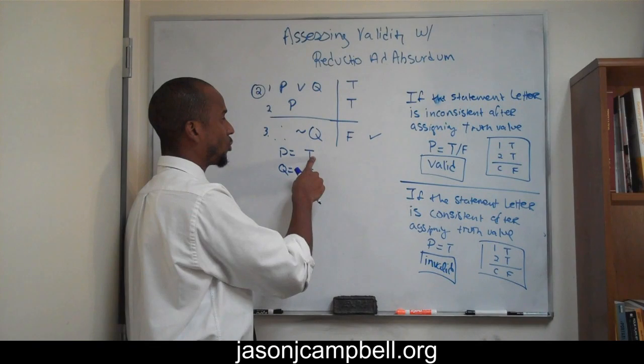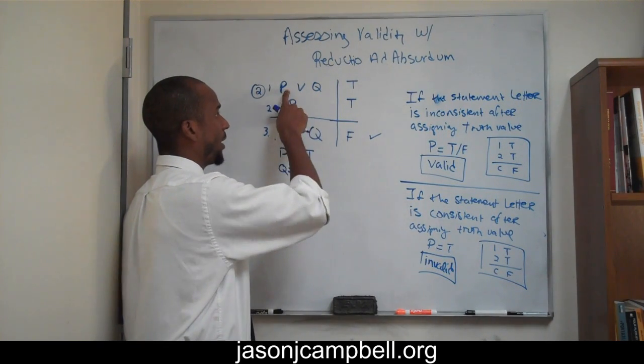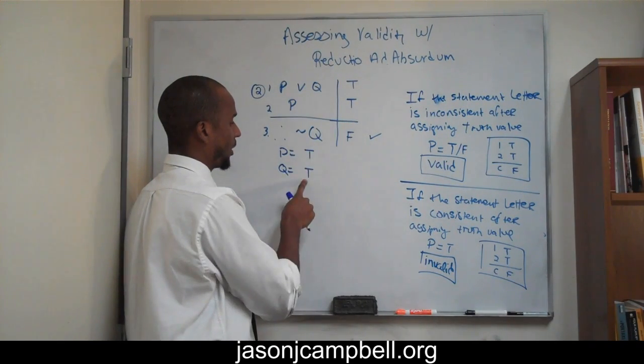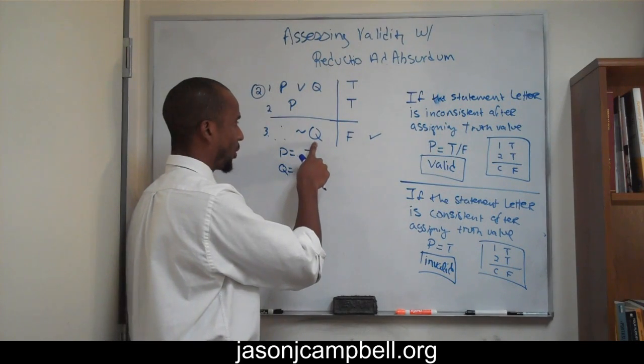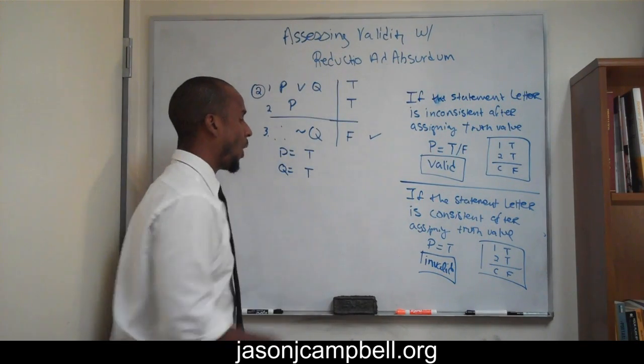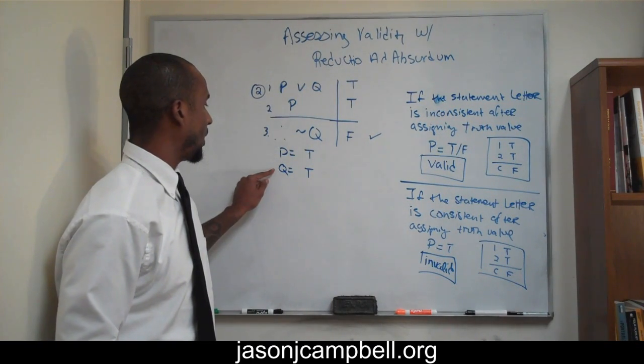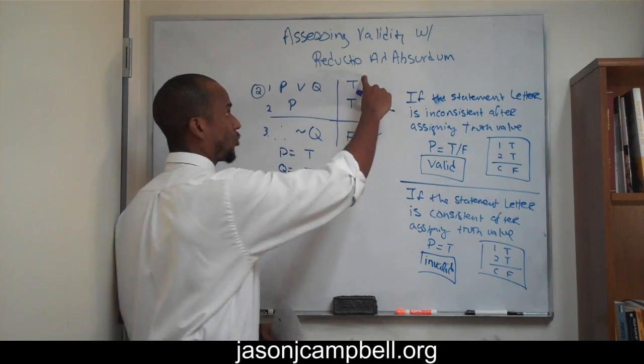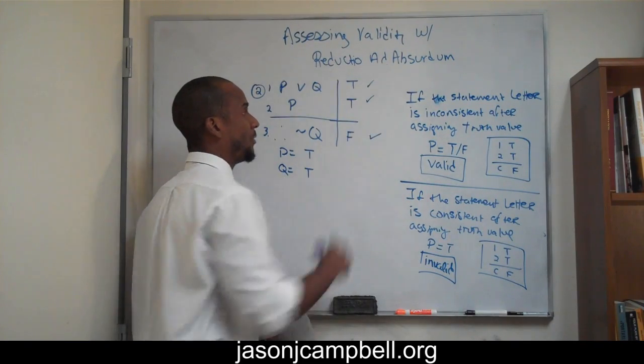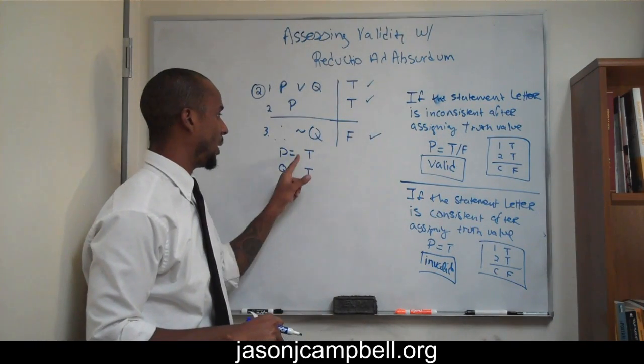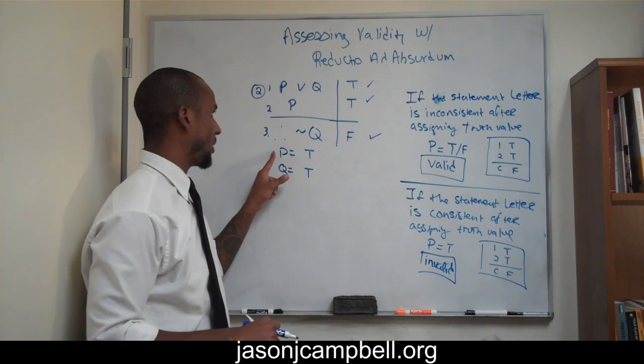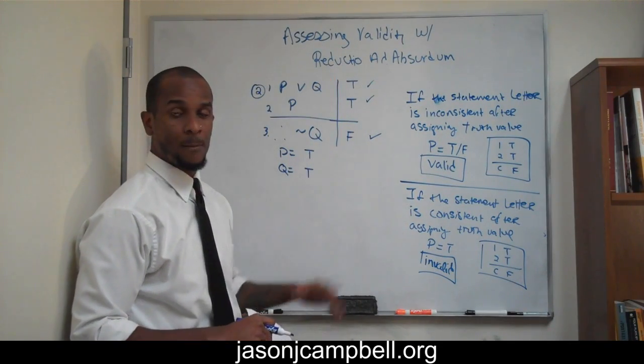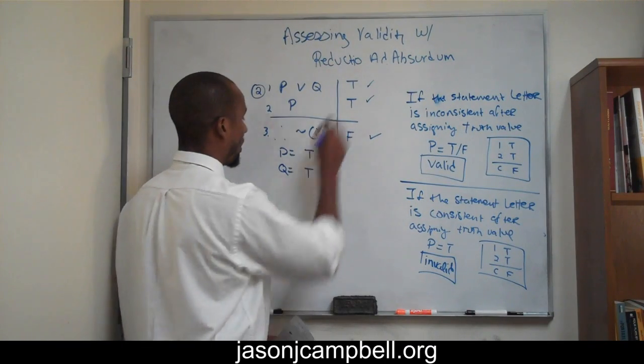And then we recognize that in plugging in true for line two to attain this truth, that it would work here. If it's true and true, it's true. I plug in true for P, true, true. And I plug in true for Q, not true is false. Well, all I've done is I've plugged in true for P and true for Q, and my argument has an invalid structure. Because I have true premises and a false conclusion. I have true premises and a false conclusion by just substituting true for this statement letter, and true for Q, the statement letter, and I've attained an invalid format. Therefore, we recognize immediately that this argument is invalid.